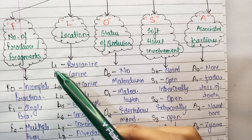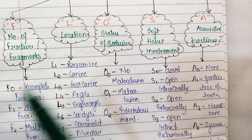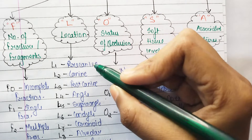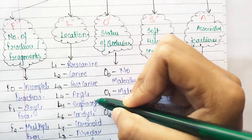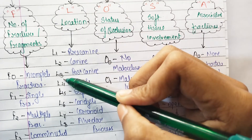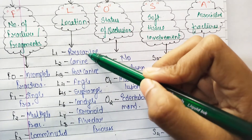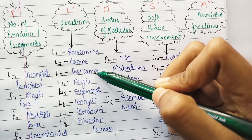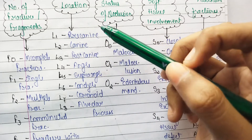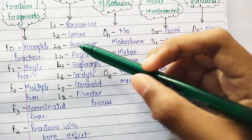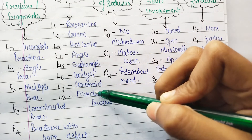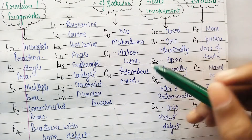L — location — ranges from L1 to L8. You need to remember: canine, angle, condyle, coronoid, and alveolar process. L1 is pre-canine, L2 is canine, L3 is post-canine; then L4 is body, L5 is angle, L6 is condyle, L7 is coronoid, and L8 is alveolar process.